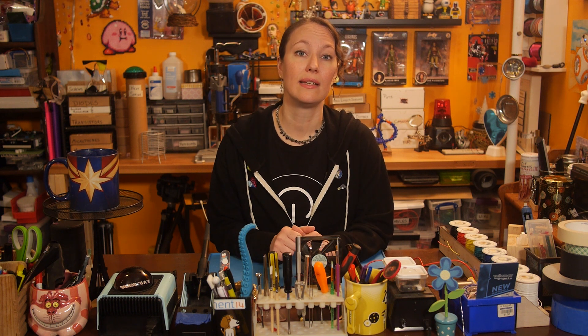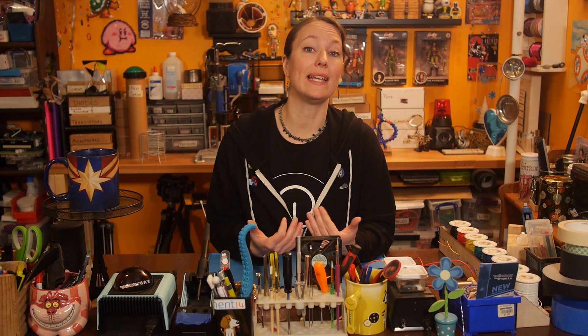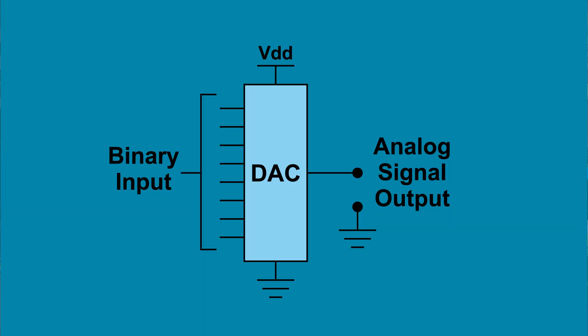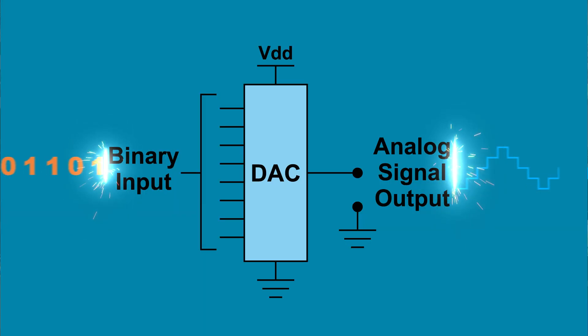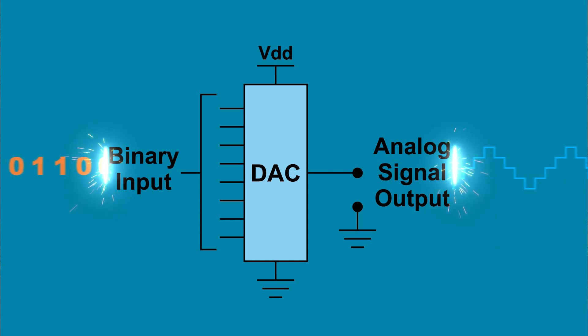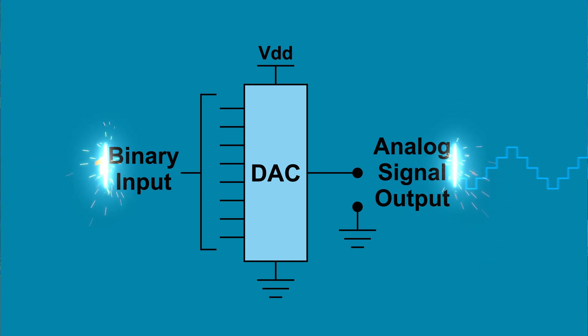There are many cases where output signals can be digital. However, since the world is analog, sometimes those digital signals must be converted back to analog in order to be used. This is when we need a digital to analog converter. A DAC takes a binary number and converts it to an analog voltage that is proportional to the binary number.